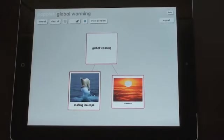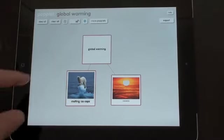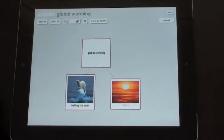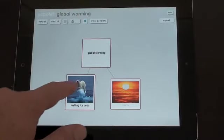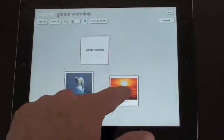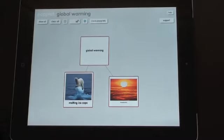You're going to have melting ice caps. You're going to have increased temperatures. A few other options. If you think you're finished with your mind map, you can lock the screen so you can't actually make any changes to it. But we'll unlock that for now.